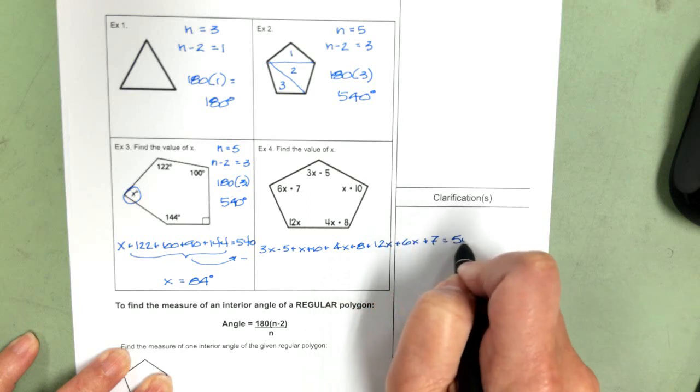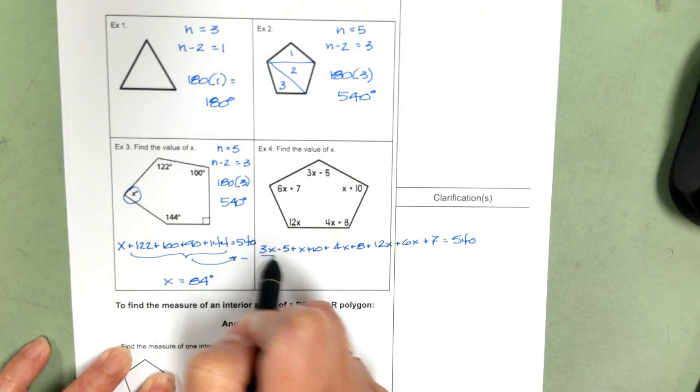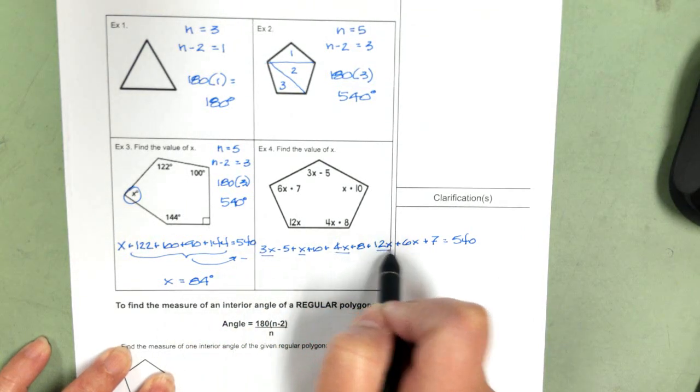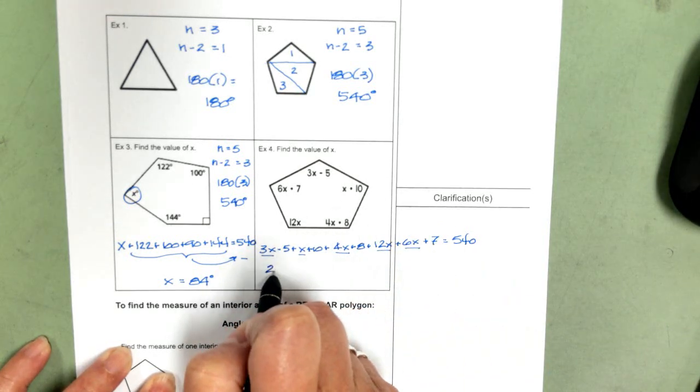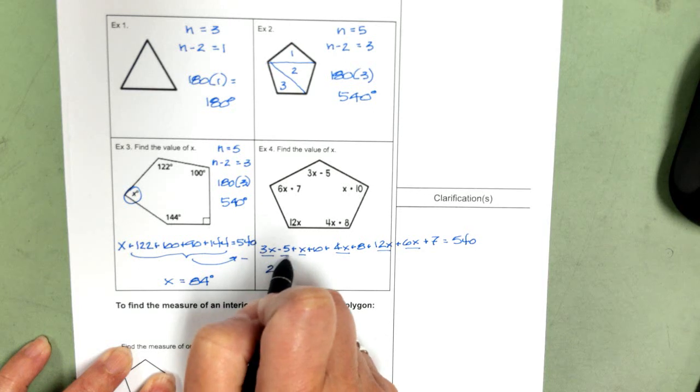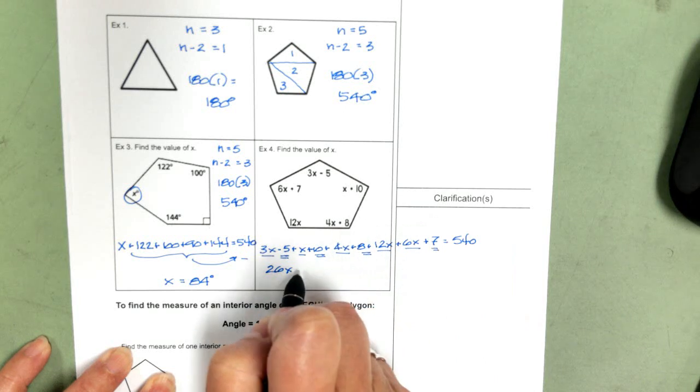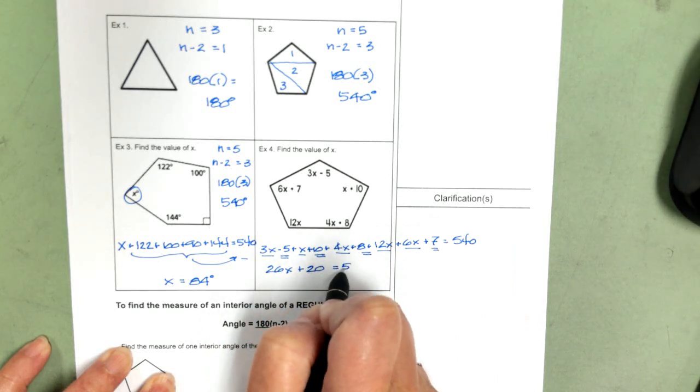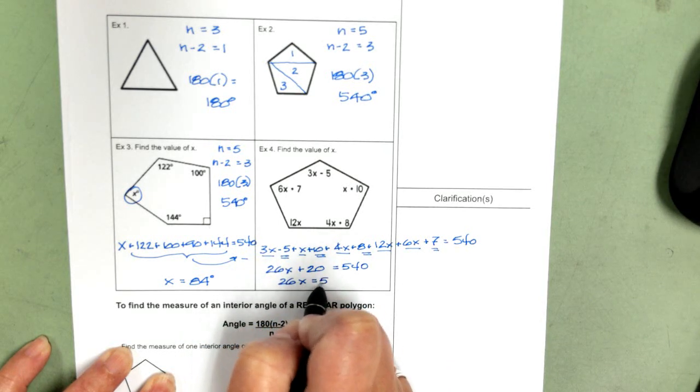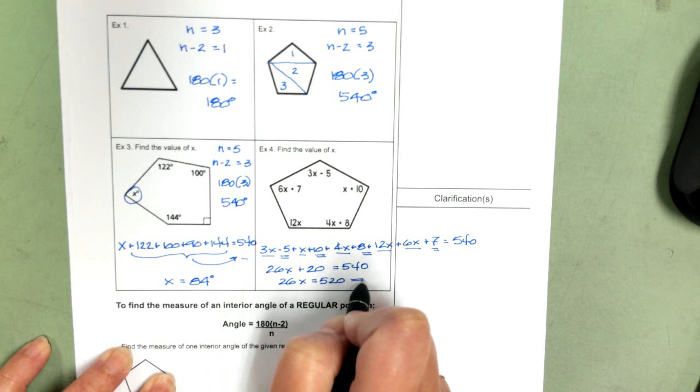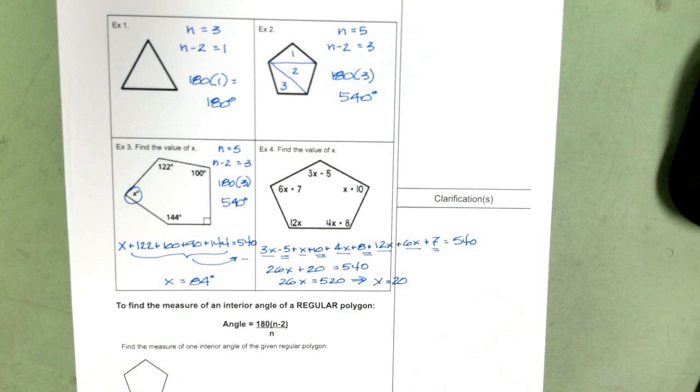When we combine our like terms, we get 26x plus 20 equals 540. So 26x equals 520, which means x equals 20.